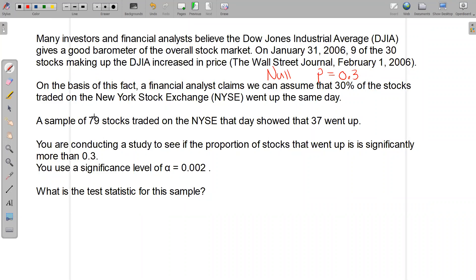We have some sample information here. A sample of 79 stocks traded on the NYSE that day showed that 37 went up. So this is my N and this would be my X, which gives me my P prime, which is always X over N. We're conducting a study to see if the proportion of stocks that went up is significantly more than 30%. Since this doesn't have an equal to, this must be the alternative hypothesis.